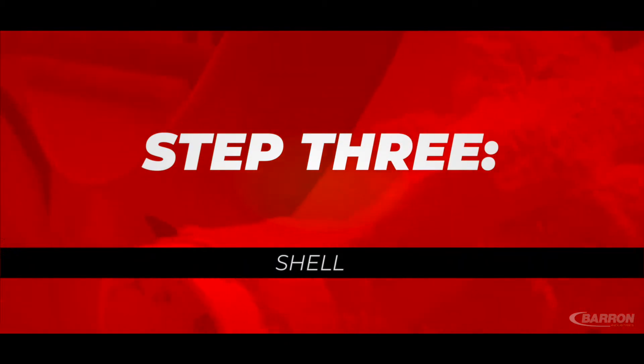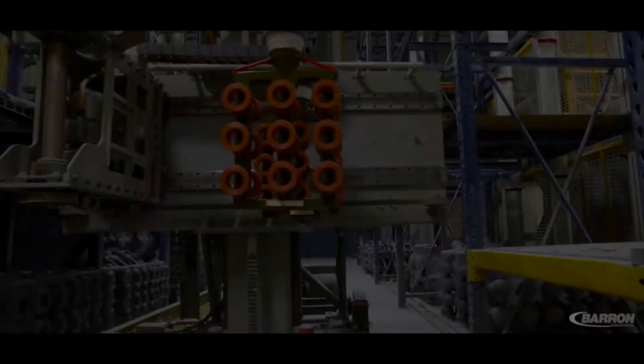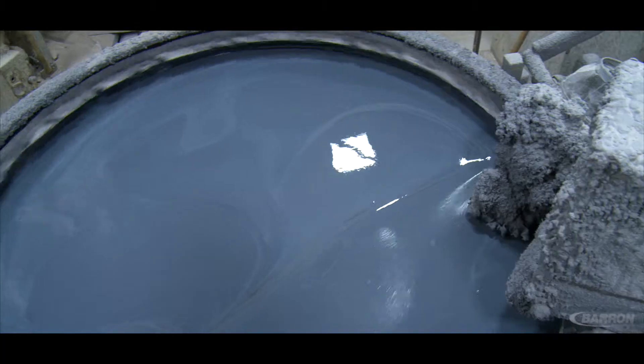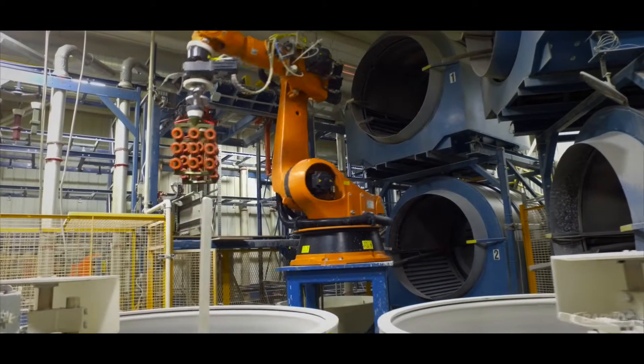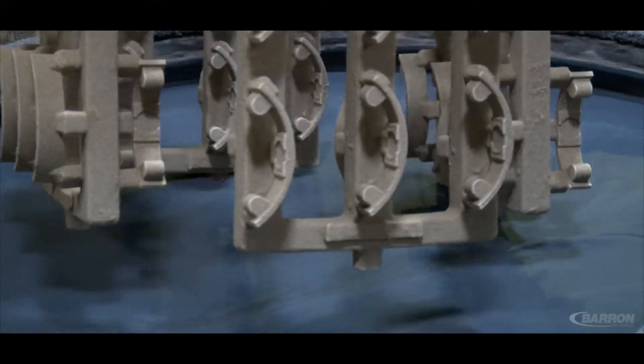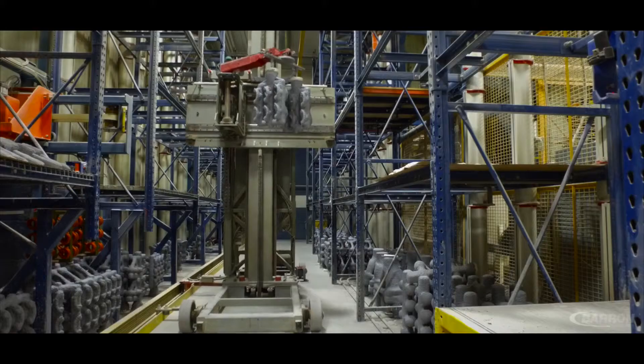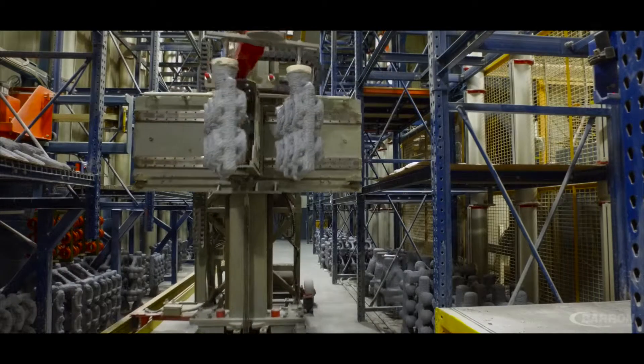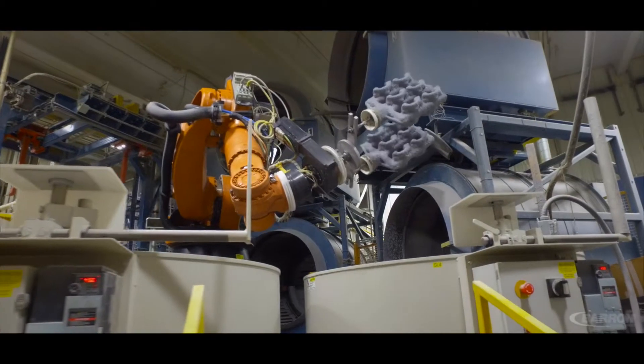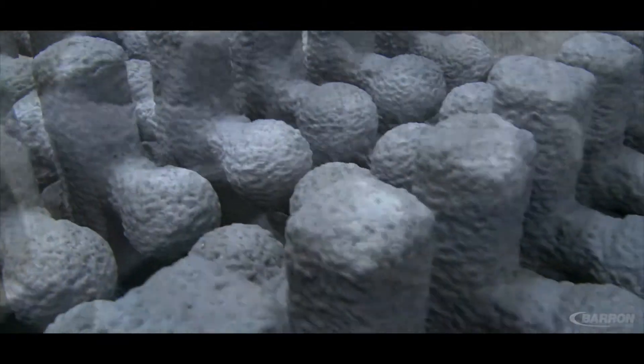Step three: creating the shell. To begin creating the shell, the wax tree is dipped into a ceramic bath or slurry. Taking advantage of Barron's six-axis dipping robot ensures consistency and uniformity of shell production in intricate and complex parts. After dipping, fine sand or stucco is applied to the wet surface. The mold is allowed to dry, and the process is repeated a number of times, resulting in a layered ceramic mold capable of withstanding the stresses of the casting process.